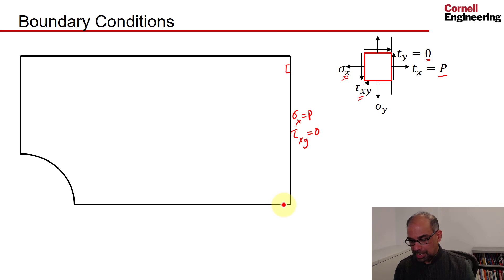What about at the lower boundary? Now, that's a symmetry boundary, which means it can move only parallel to itself. It cannot move in the y direction. That implies that v is equal to zero.